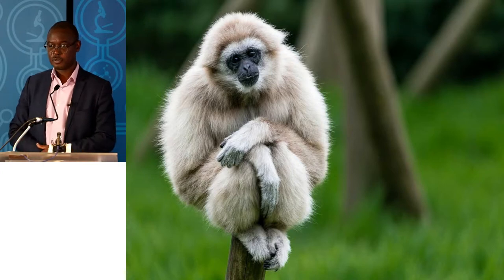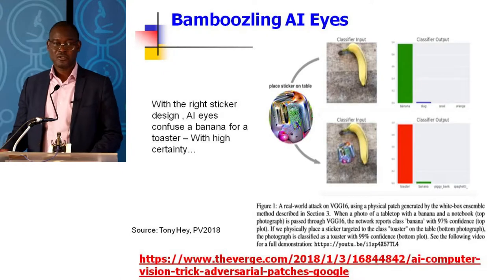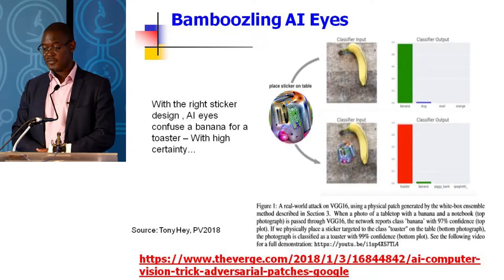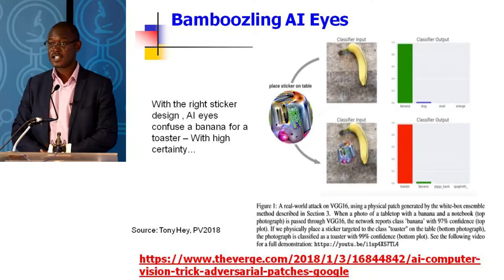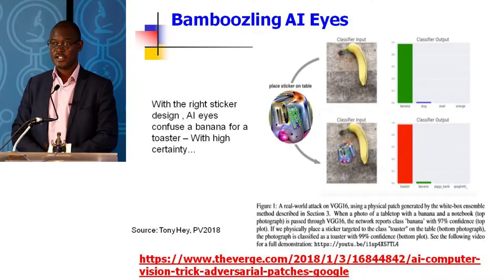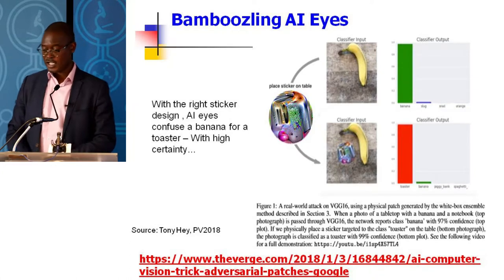So the hype — you must understand the limitations of technology, both practically and theoretically. We can bamboozle the AI. There's a picture of a banana the AI can recognize as a banana on its own. You put a little bit of a well-designed sticker next to it and it thinks it's a toaster. So if you religiously believe in these things, you have to understand the use cases where the technology makes sense.